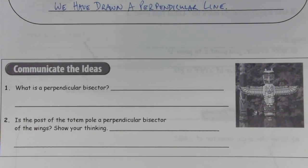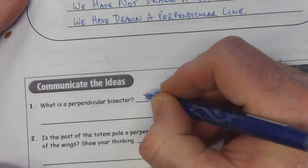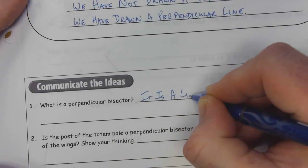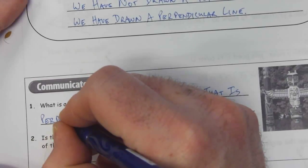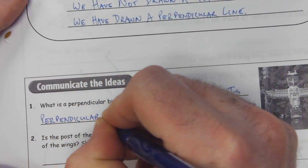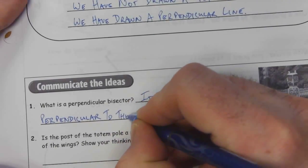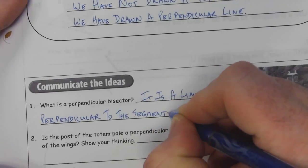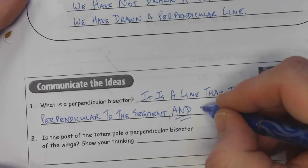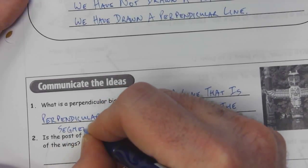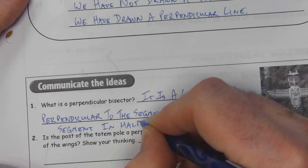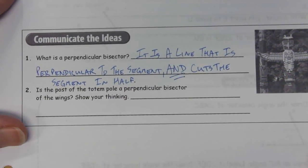For 'communicate the ideas,' we have a couple of questions here. Number one: what is a perpendicular bisector? It is a line that is perpendicular to the segment, and this is important — it cuts the segment in half. So that's a perpendicular bisector: a line that is perpendicular to the segment and cuts the segment in half.